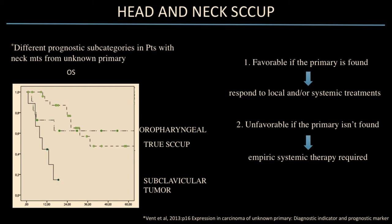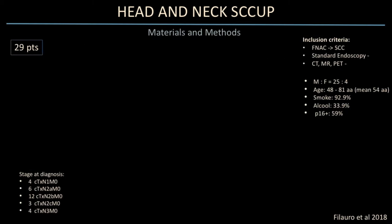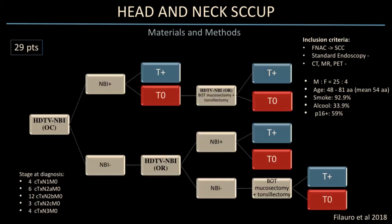For instance, in a non-surgical protocol, when the primary is found you can reduce the dose and field of irradiation. In true unknown primary cases where no primary is found, you have to extend the field of irradiation from the skull base to the clavicle. This is the protocol we used; inclusion criteria required positive cytology for squamous cell carcinoma.